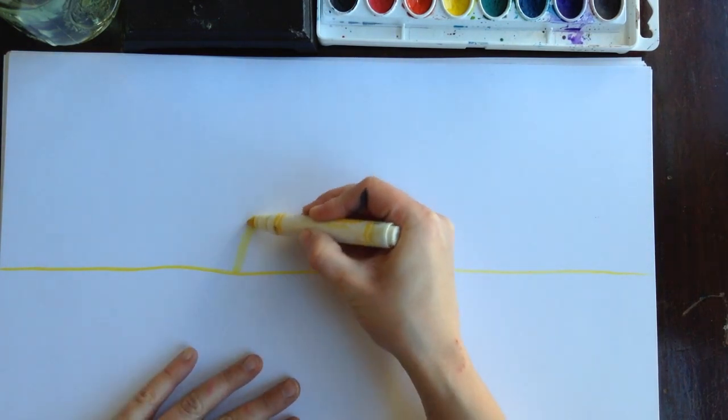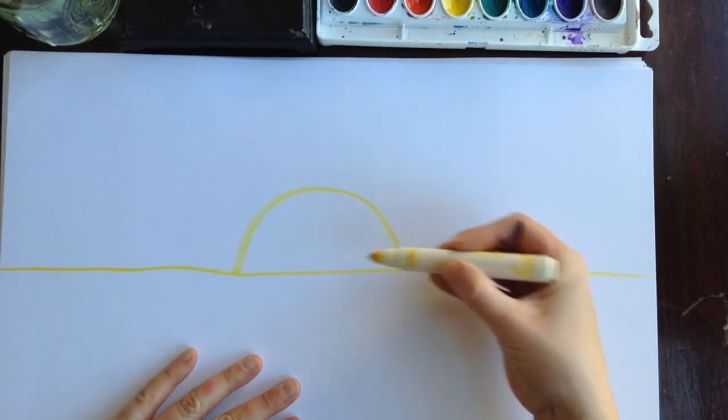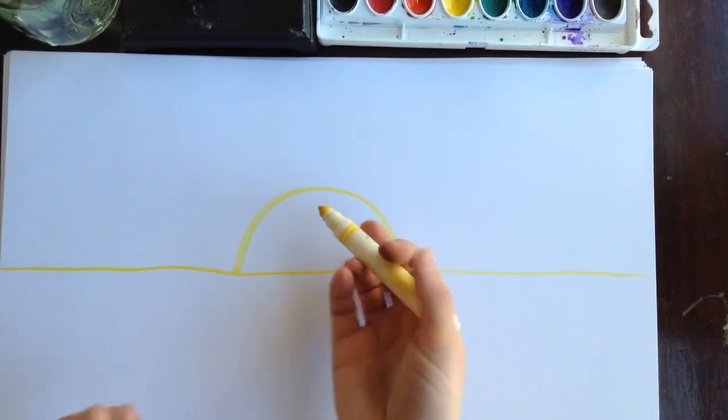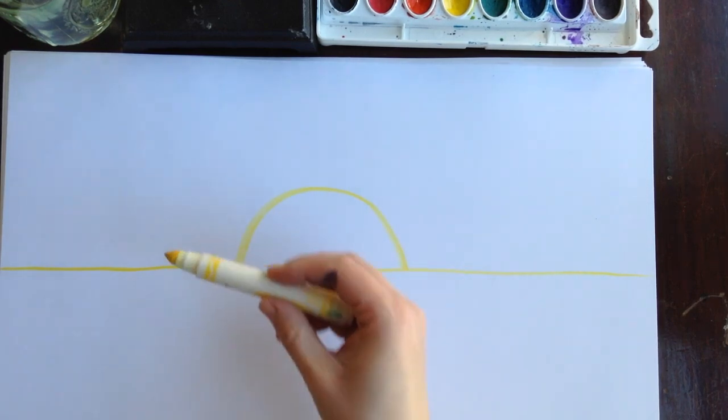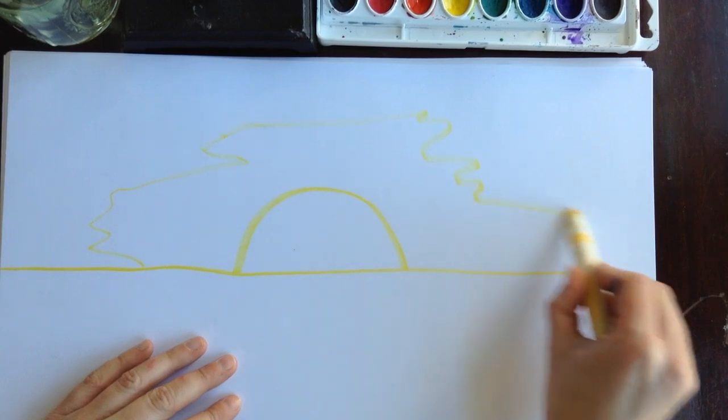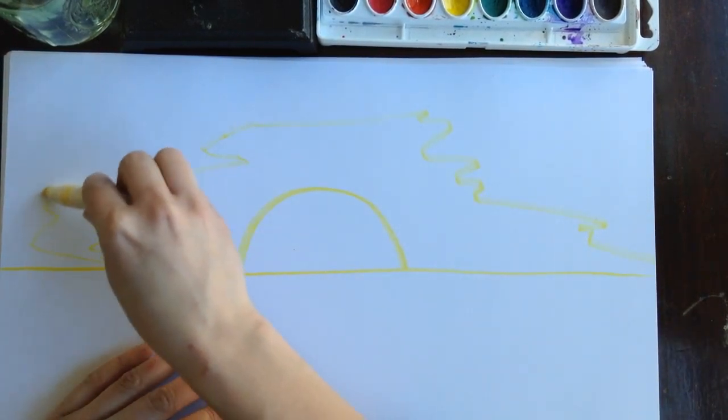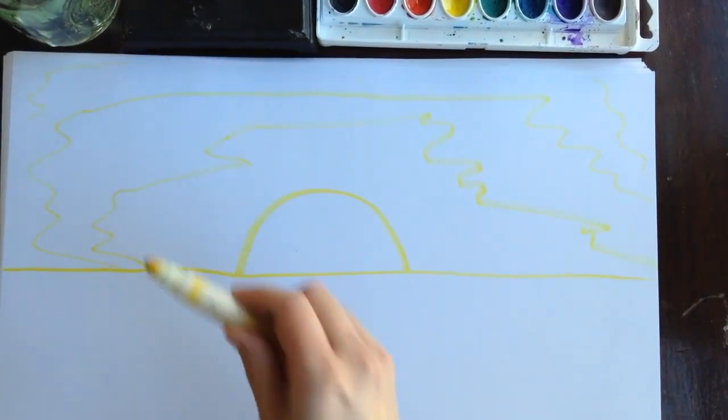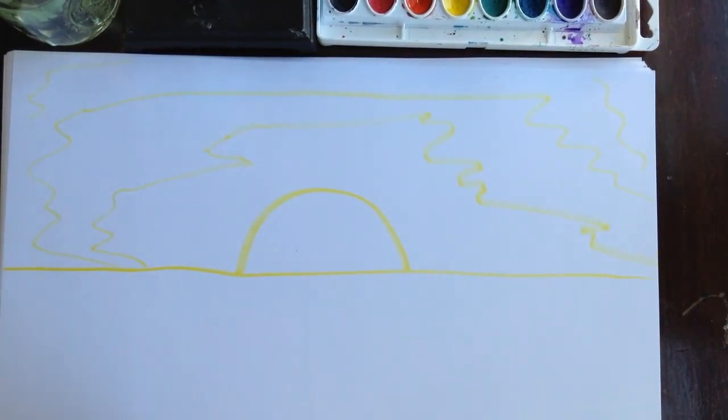I'm just going to do a sunset in the background for my warm colors. If you want to do fire or lava or something else that would be warm colors, that's fine. But for a sunset, I'm going to draw the different colors that a sunset might have. And you're going to paint it in later.